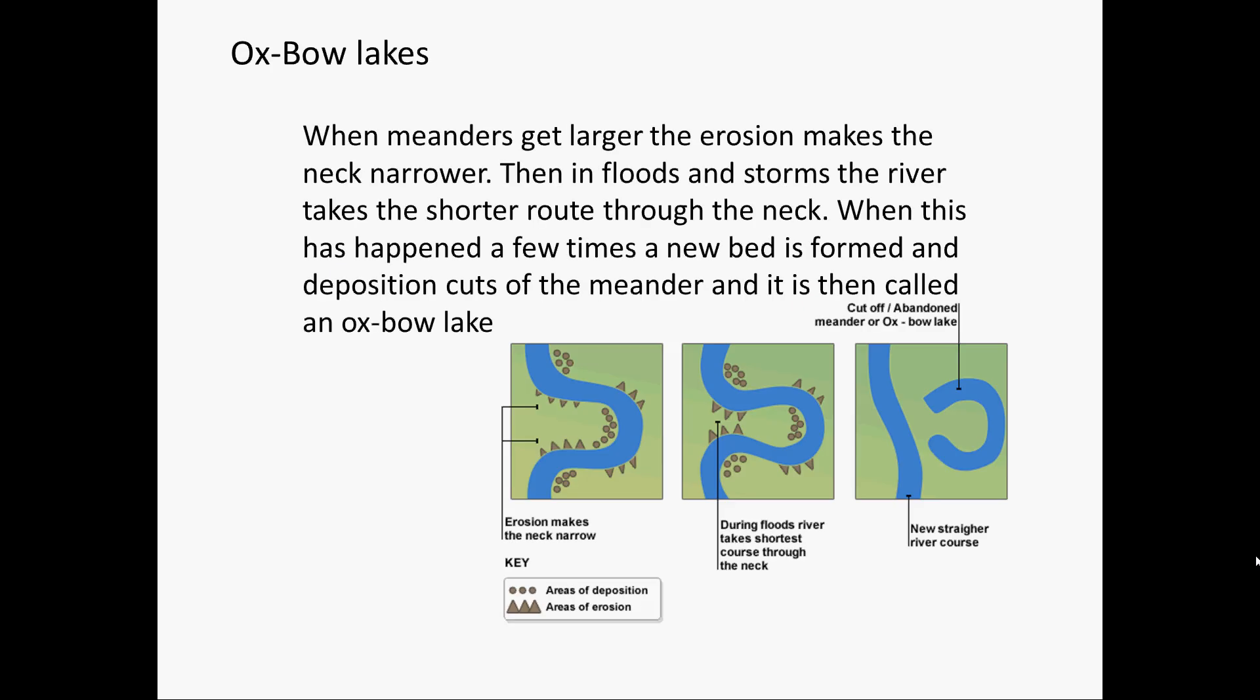When a meander gets so large that the erosion makes the neck narrower, and then in floods and storms the river takes a shorter route through the neck. When this has happened a few times, a new bed is formed and deposition cuts off the meander and it is then called an oxbow lake.